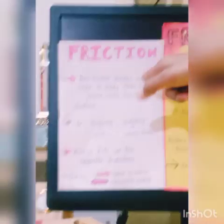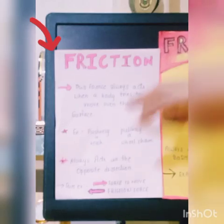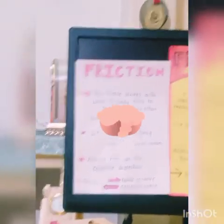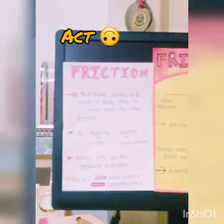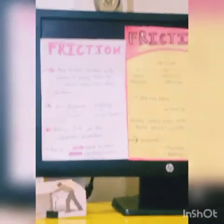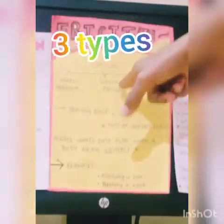What is friction? This force always acts when a body tries to move over another surface. We have seen that when any rough surface moves on another surface — for example, pushing a book or pulling a wheelchair — friction acts in the opposite direction. Now, how many types of friction are there? There are three types of friction: static friction, sliding friction, and rolling friction.